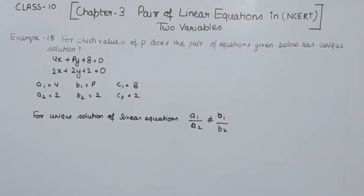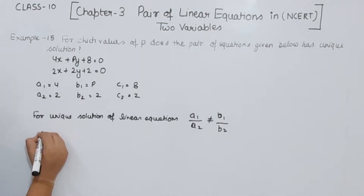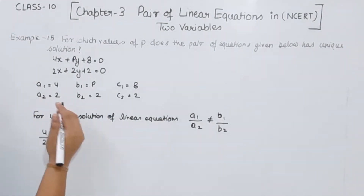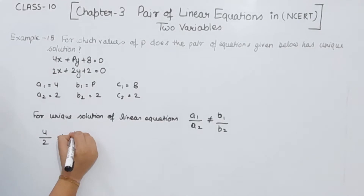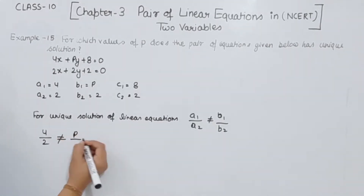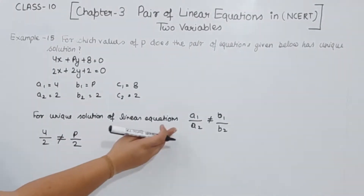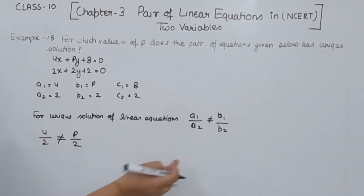So we write here: A1 by A2 is 4 by 2, and B1 is P while B2 is 2. This should not be equal to B1 by B2.